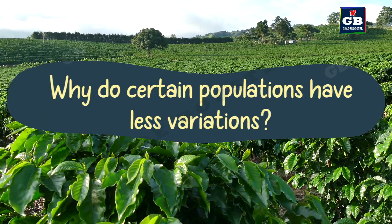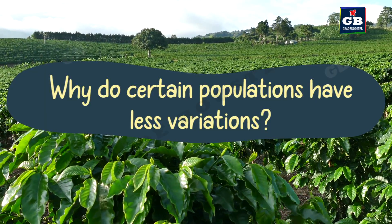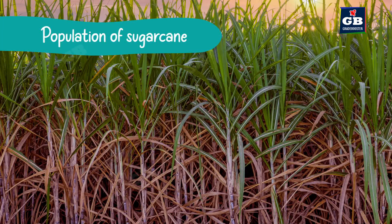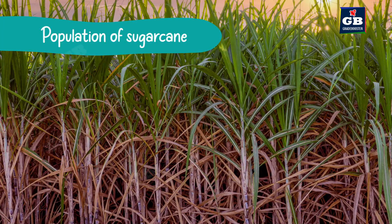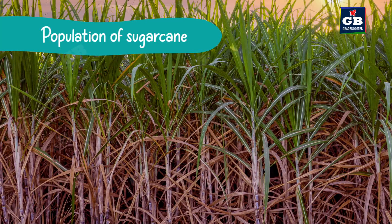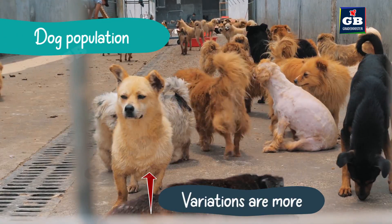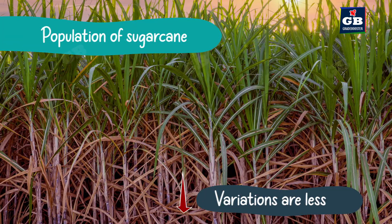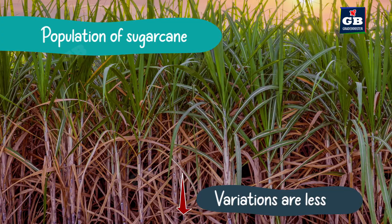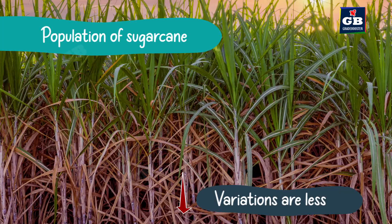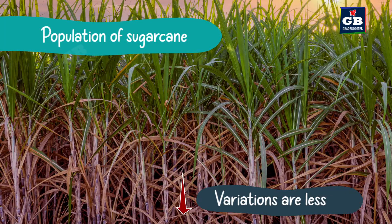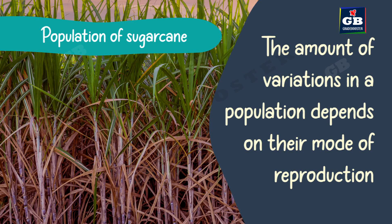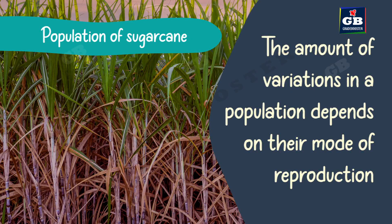Why do certain populations have less variations? Here we can see a sugarcane crop — we find very little differences between two sugarcanes. But in the dog population, we could find many differences. So what determines the amount of variations in a population? The amount of variations depends upon their mode of reproduction, linking it to the process of reproduction.